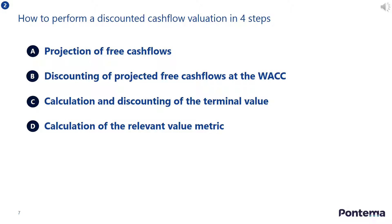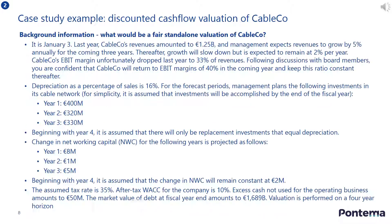The four steps are: firstly, to project free cash flows; secondly, to discount the projected free cash flows at the weighted average cost of capital; thirdly, to calculate and discount the terminal value; and fourthly, to calculate the relevant value metric, such as enterprise value. Here is the short case study you will work through during the remainder of this lesson. Please take time to read it before progressing, and consider what a fair stand-alone value of CableCo would be.